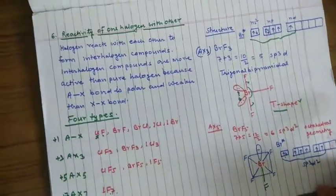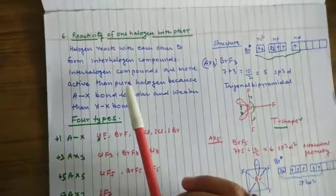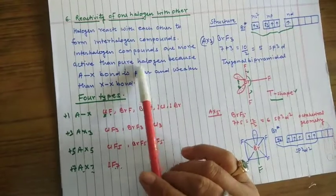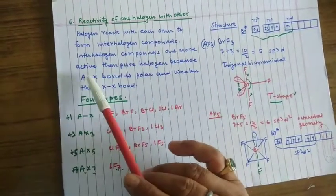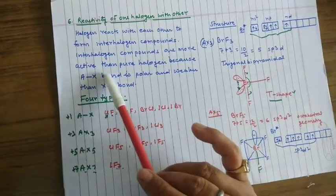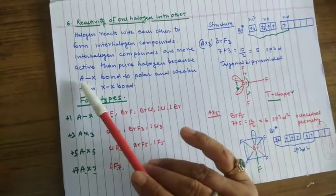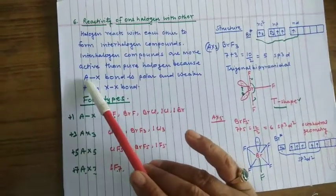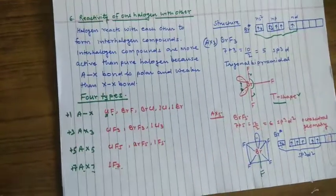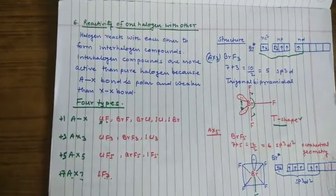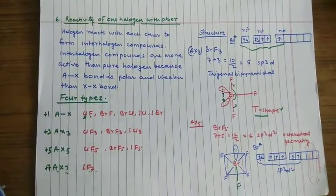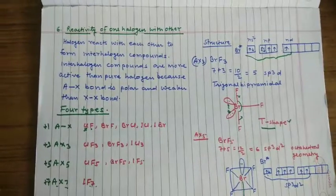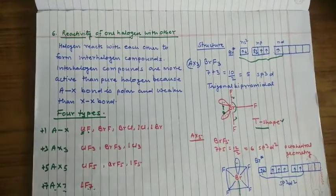Next is about the reactivity of one halogen with another. Halogens react with themselves, one halogen reacts with another halogen to form interhalogen compounds. Interhalogen compounds are more active than the pure halogen because the A-X bond is polar and weaker because the two halogen atoms are different. The orbital overlap is not to much extent. This is why the interhalogen compounds are more reactive than the pure halogen.